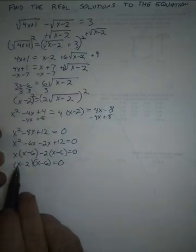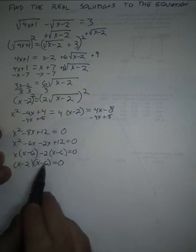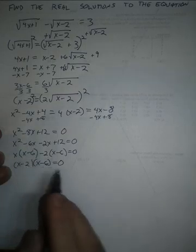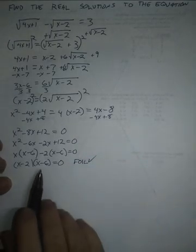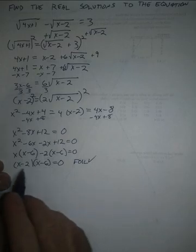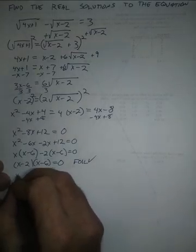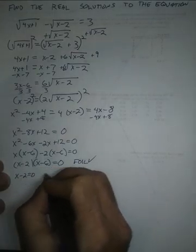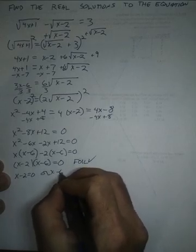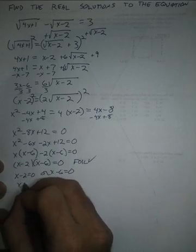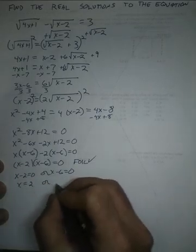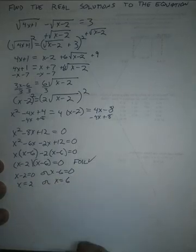Foil it out real quick to check in my head. x squared minus 2x minus 6x is minus 8x plus 12. Yes. So I checked it with a foil in my head. And now I can use the zero product property to say x minus 2 equals 0 or x minus 6 equals 0 should solve this. That means x equals 2 or x equals 6.